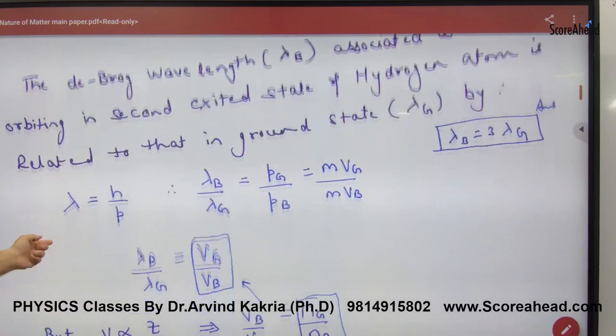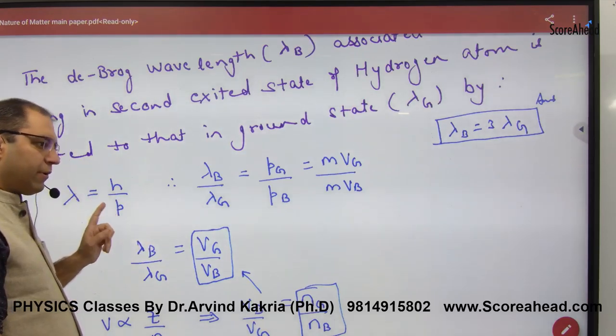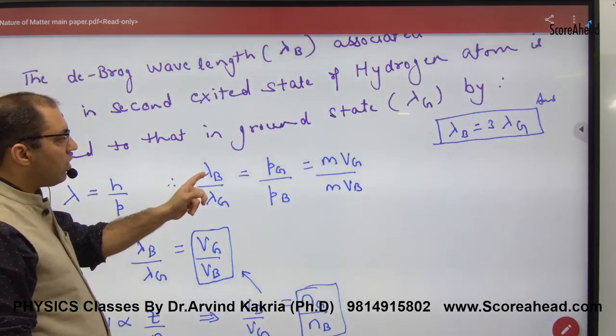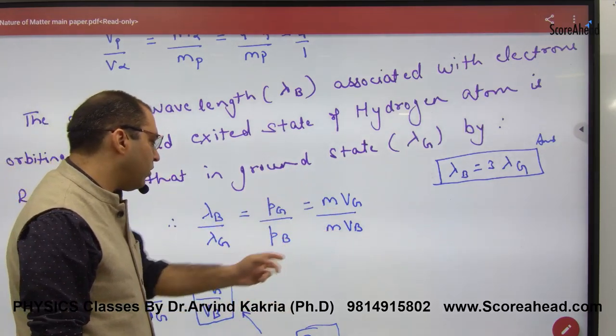What is lambda? h by p. And p is mass into velocity. So lambda is inversely proportional to p. De Broglie's wavelength for n equals 3 and ground state, inversely proportional to momentum. Momentum is mass into velocity. Mass is the same. So lambda is inversely proportional to velocity.